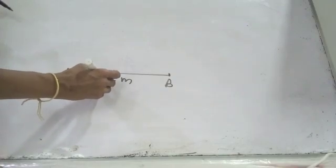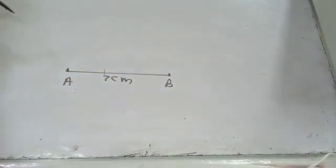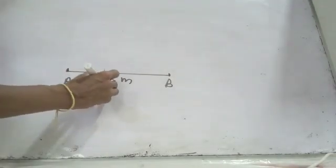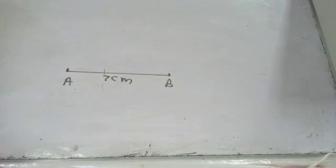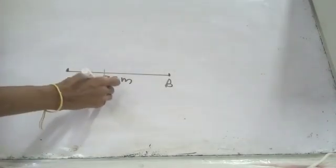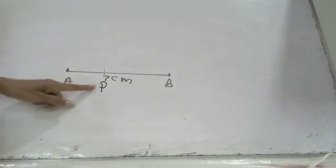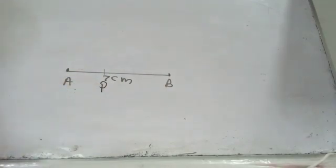Name this point as P. AP equals 3 cm. We name this point as P, capital letters. We use capital letters. Name the point as P.